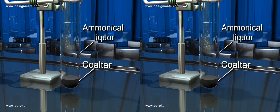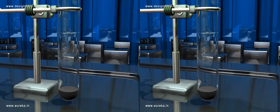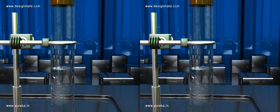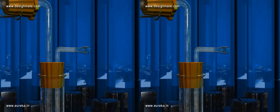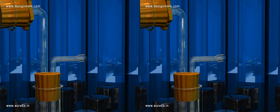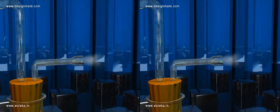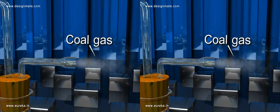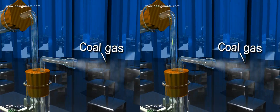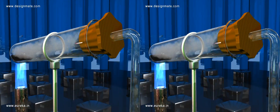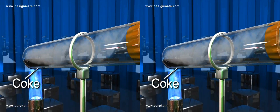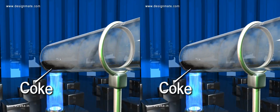Lastly, the unreacted vapors are released through the outlet of this tube, called coal gas, which is combustible. The material left behind in the horizontal tube is called coke.